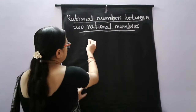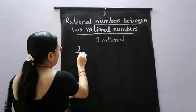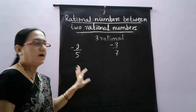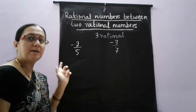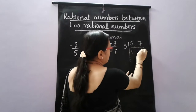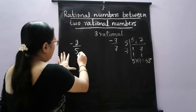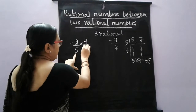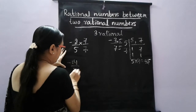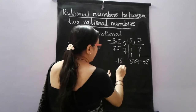One more example: find 3 rational numbers between minus 2 by 5 and minus 3 by 7. Again, denominators are different, so the first step is to make them equal by taking LCM of 5 and 7. 5 × 7 = 35 is the LCM. So minus 2 by 5 becomes minus 14 by 35, and minus 3 by 7 becomes minus 15 by 35.